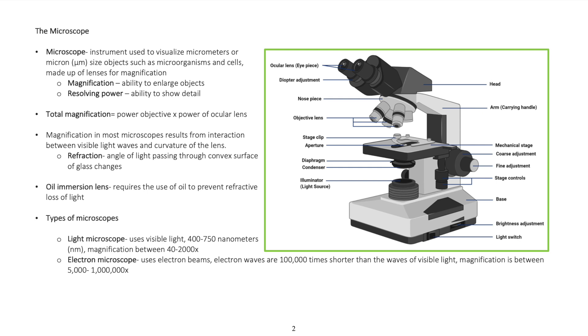There are different types of microscopes. The light microscope uses visible light, 400 to 750 nanometers, with magnification between 40 to 2000 times. The electron microscope uses electron beams. Electron waves are 100,000 times shorter than the waves of visible light, with magnification between 5,000 to 1 million times.